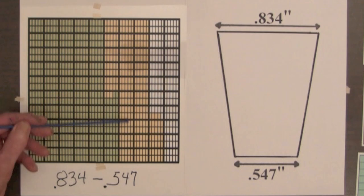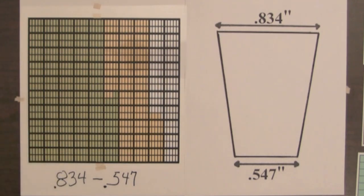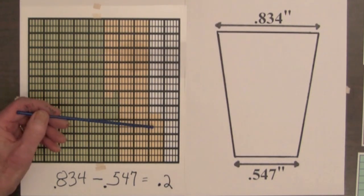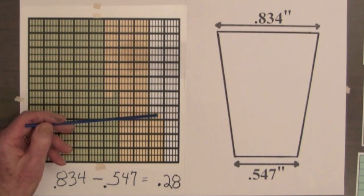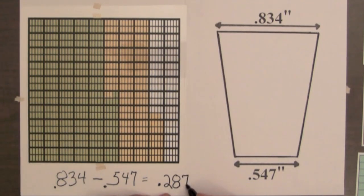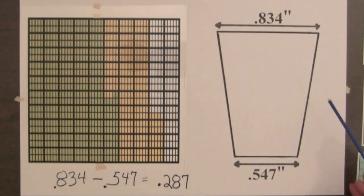There are two full tenths columns, so we have two tenths. There are 8 small hundred squares. And there are 7 tiny thousandths parts. So the difference between the top diameter and the bottom diameter is 287 thousandths of an inch.